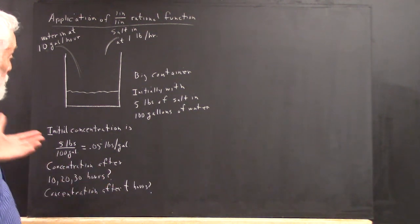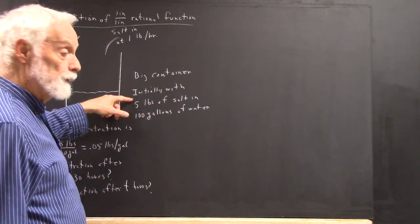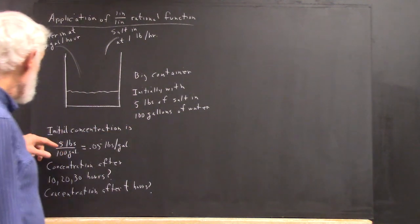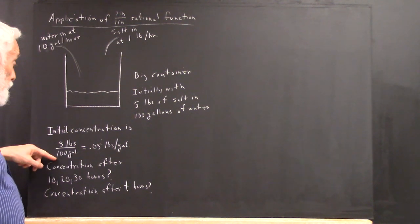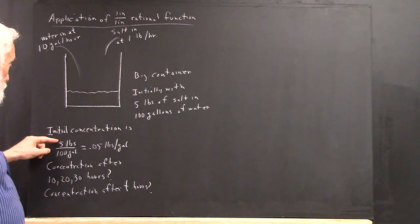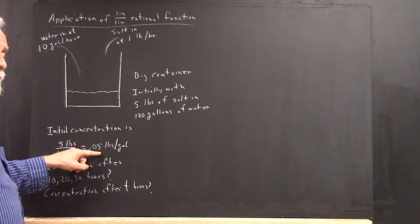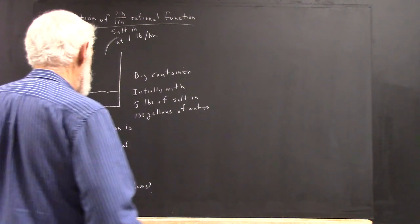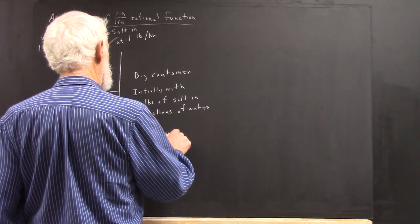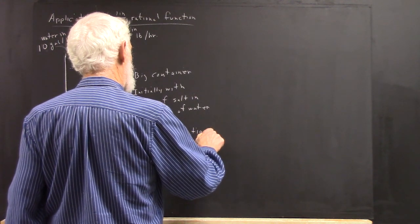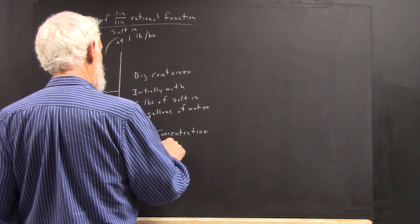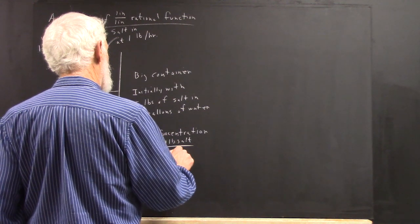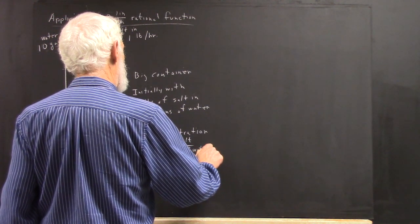What do I mean by concentration? Well, the initial concentration — we have 5 pounds of salt and 100 gallons of water. The concentration is how much salt we have per gallon. We divide the number of pounds of salt by the number of gallons, and we get the initial concentration. Initially, we have 5 pounds and 100 gallons, so we have 0.05 pounds per gallon. Any time we want to get the concentration, it's the number of pounds of salt divided by the number of gallons of water.